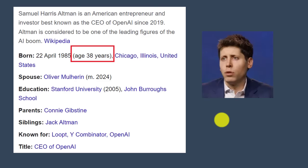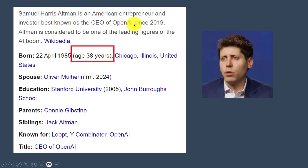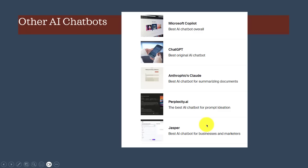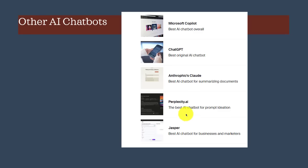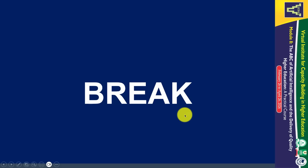Who has helped the world with this AI chatbot technology? It's none other than this 38-year-old — Samuel Harris Altman, entrepreneur and investor. OpenAI is the developer of ChatGPT. But there are other chatbots: you have Microsoft Copilot — which I used in Lesson 2 — ChatGPT, Anthropic Claude, Perplexity AI, Jasper, and Gemini. We are going to use those. Let's go on a short break and come back to look at the other two. I hope you are enjoying the lesson as I am enjoying delivering it to you.